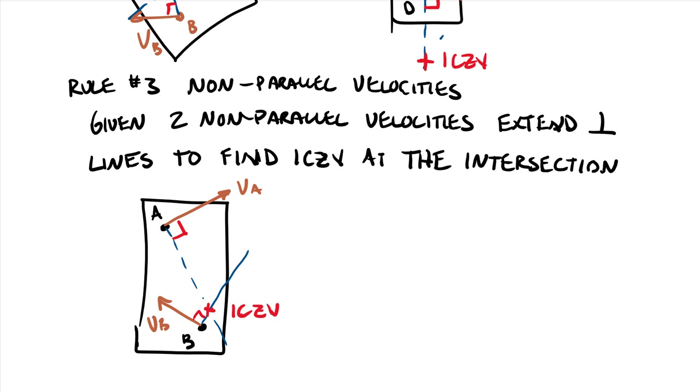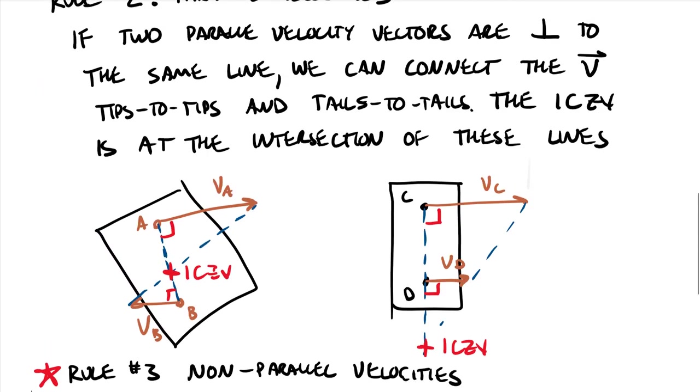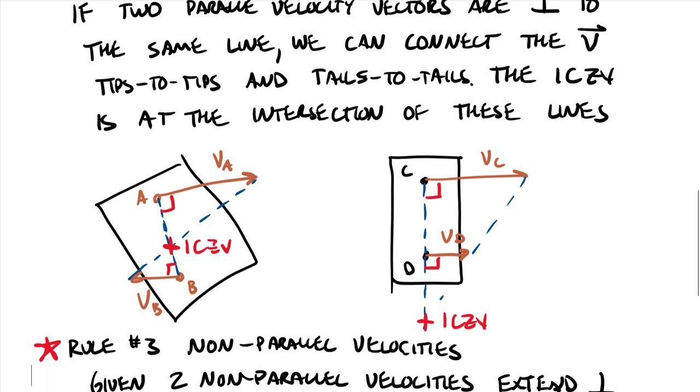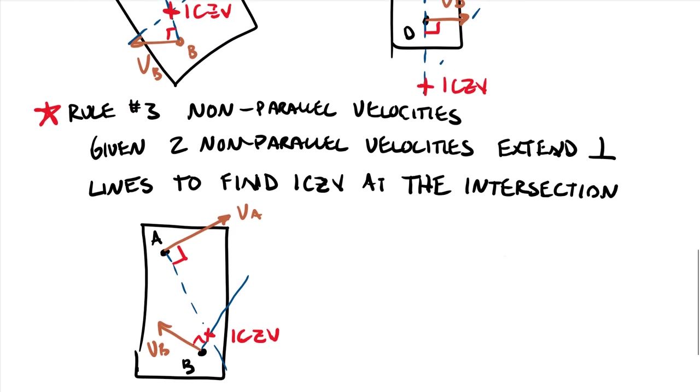So it turns out that this last one, quite honestly, is the one that gets used a lot in general plane motion systems, as in like solving four-bar linkages and different things like that. As compared to these other two get used quite a bit for pulley problems and some other problems like rolling wheels and those types of things. But these are the three basic rules.